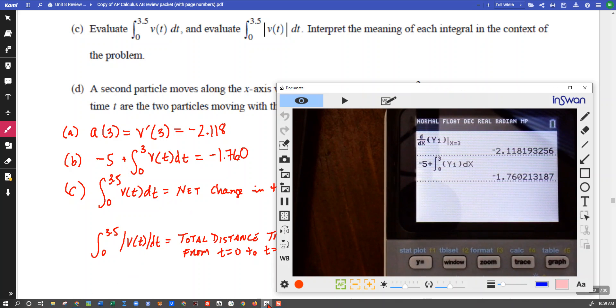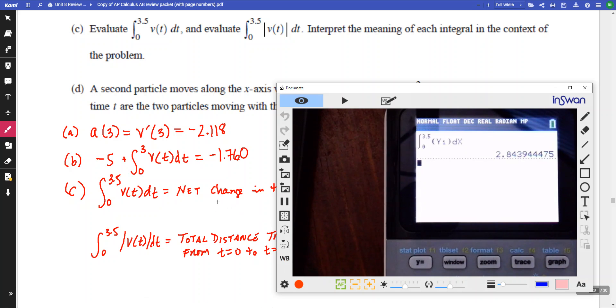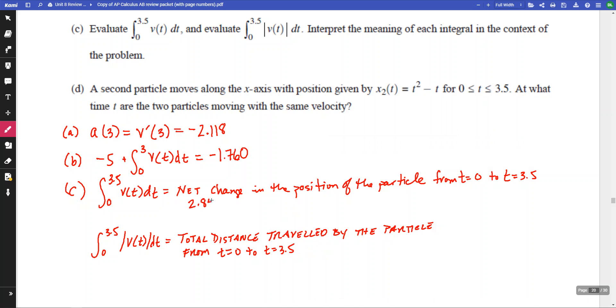Then we need the actual value from our calculator. So we're going to say, what is our integral from 0 to 3.5 of that velocity function? And we need to go to our error, because we forgot to put it in the dx. And that is 2.843. Once again, truncating is okay. So 2.843.